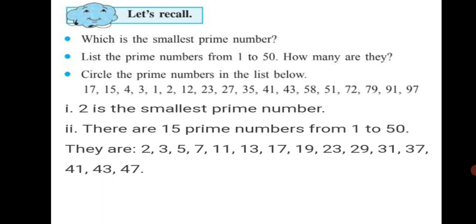There are 15 prime numbers from 1 to 50. They are 2, 3, 5, 7, 11, 13, 17, 19, 23, 29, 31, 37, 41, 43 and 47. Altogether 15 prime numbers from 1 to 50. They are not divisible by any other number than 1 and itself — that means they will not come in the tables of other numbers.